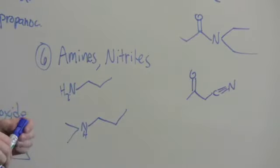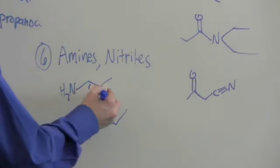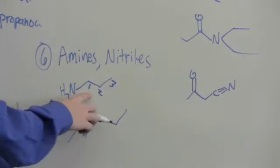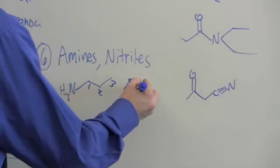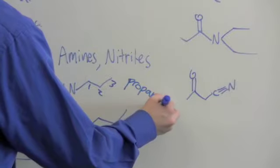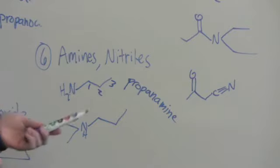Now we're going to name amines and nitriles. We'll start with the amine here. Numbering from the amine, it's a three-carbon unit, and so we're going to call this propanamine. Almost like the way we named carboxylic acid derivative amides, propanamide or whatever. This is propanamine.